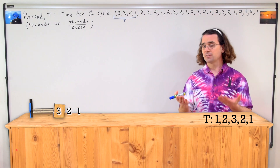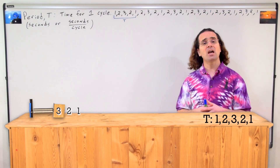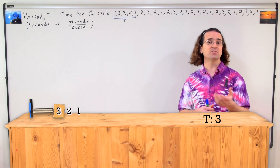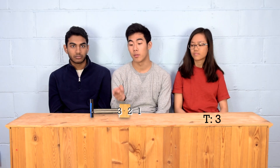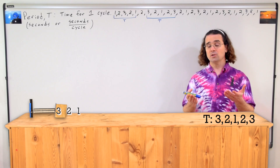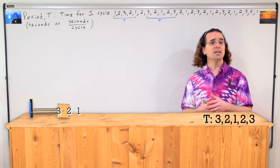Correct. Kevin, if the object starts out at position 3, please describe one full cycle. So that would be 3, 2, 1, 2, 3. Also correct.